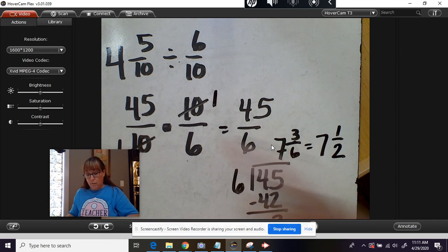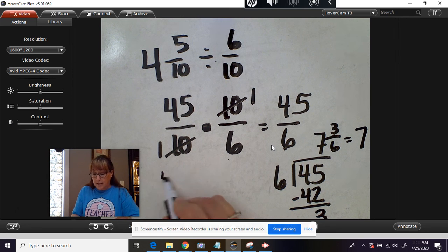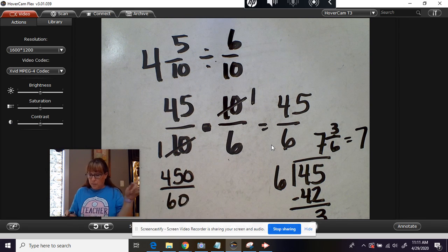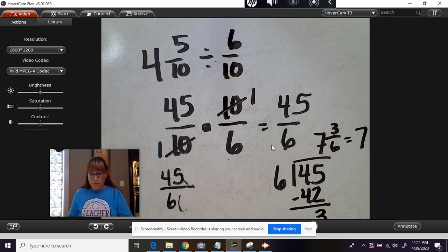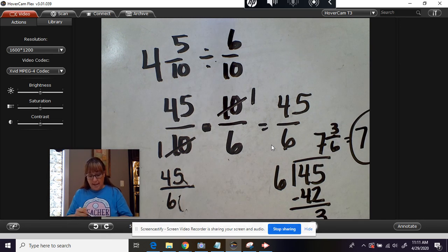Now, if you left this the way it was, let's go back and look at that. 45 times 10 is 450. 10 times six is 60. Anytime both numbers have a zero, you can get rid of those zeros. And look, you're right back to what you were doing before. How many sixes are in 45? Seven and three sixths, or seven and one half.